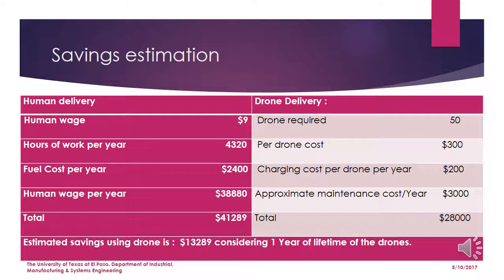This is a tentative approximation of the profit we can make from the pizza drone. Comparing drone delivery with human delivery, we can save a lot of money. Pizza shops hire delivery drivers who incur labor costs, fuel costs, and use a car, which also increases traffic. With the drone, we don't have those expenses — only the initial cost, a negligible charging cost, and low maintenance cost. Per our estimation, we can save almost $13,000 a year compared to human delivery.